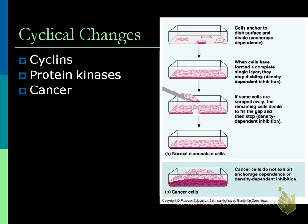On cyclins and protein kinases, you don't really have to know much about those. Just know these are different ways the cell cycle itself can be changed. Cyclins basically change which phase it's in or which checkpoint it's going to go through. And protein kinase changes the phosphates within it - changing how the proteins are lined up together. Basically, these are all examples of what happens if the cell cycle doesn't follow suit.